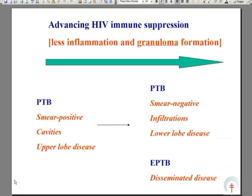HIV makes the diagnosis of TB much more difficult. As the immune system becomes more compromised, with the CD4 count becoming lower and lower, granuloma formation decreases.